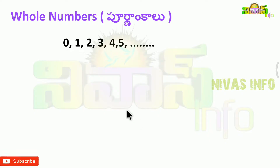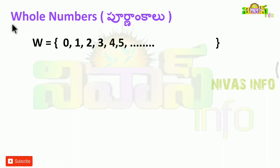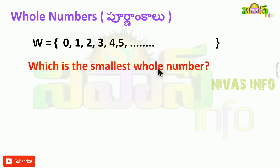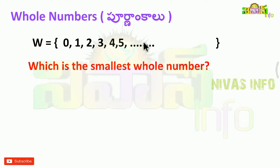Let me show you an example of whole numbers. The first letter for whole numbers is W. The smallest whole number — which is the smallest whole number? The smallest whole number is 0.